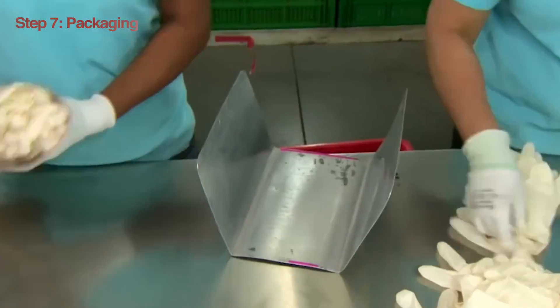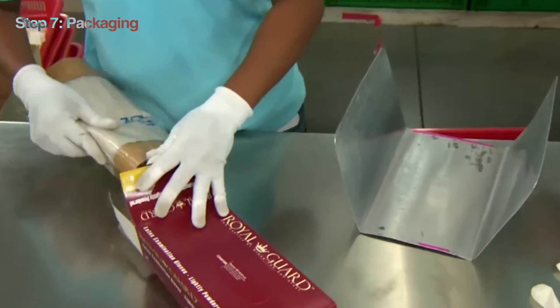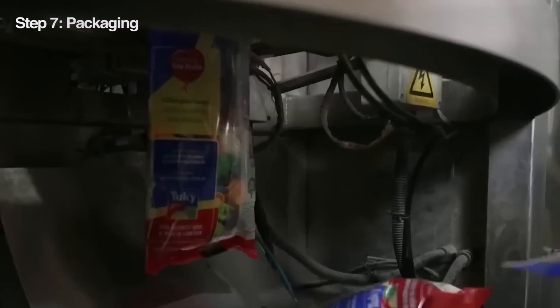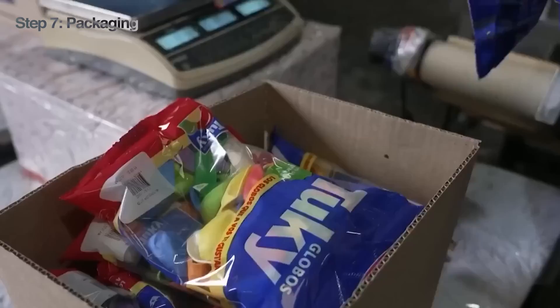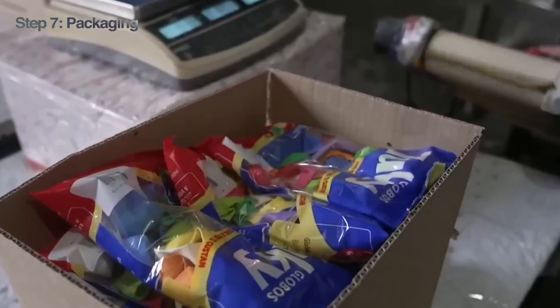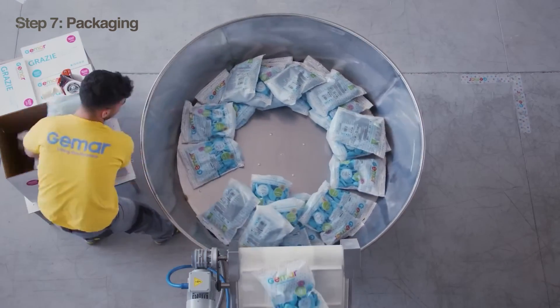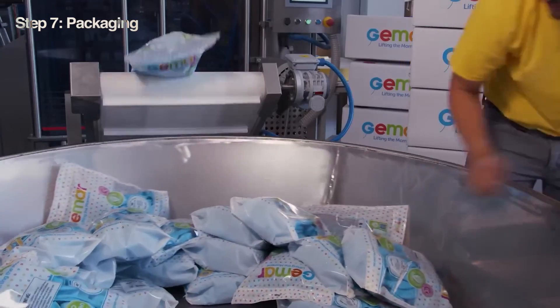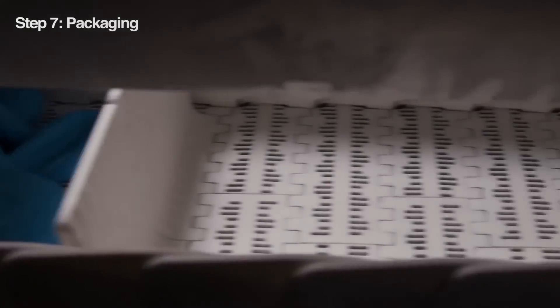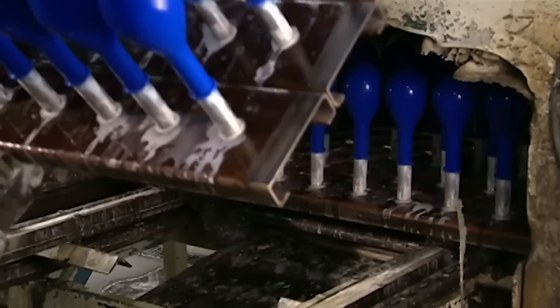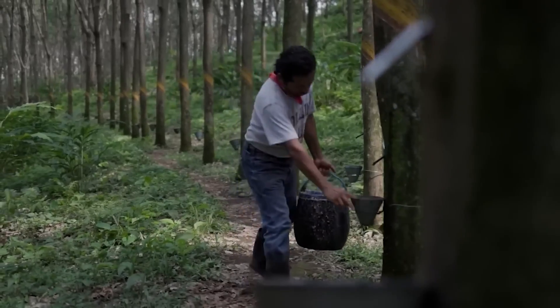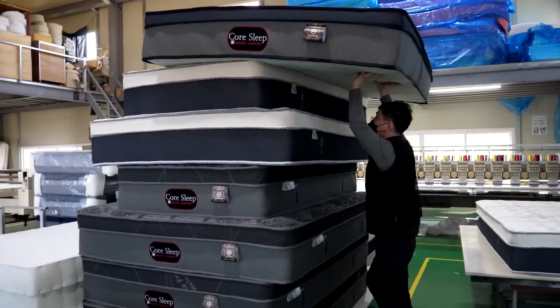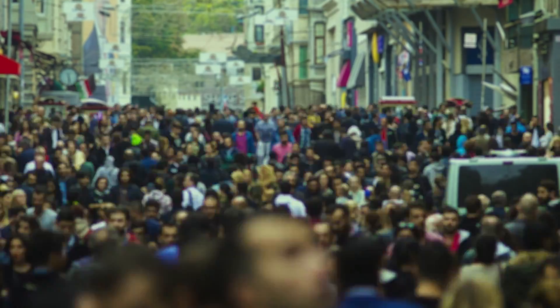With quality assurance complete, it's time to package up the freshly made latex goods. Whether it's a box of gloves or a bag of balloons, each item is carefully packed to protect it during transit and storage. These products fill your local stores and are transported to factories, homes, and offices. It's amazing to think about the journey that these products have taken, from humble latex sap to finished goods ready for use.